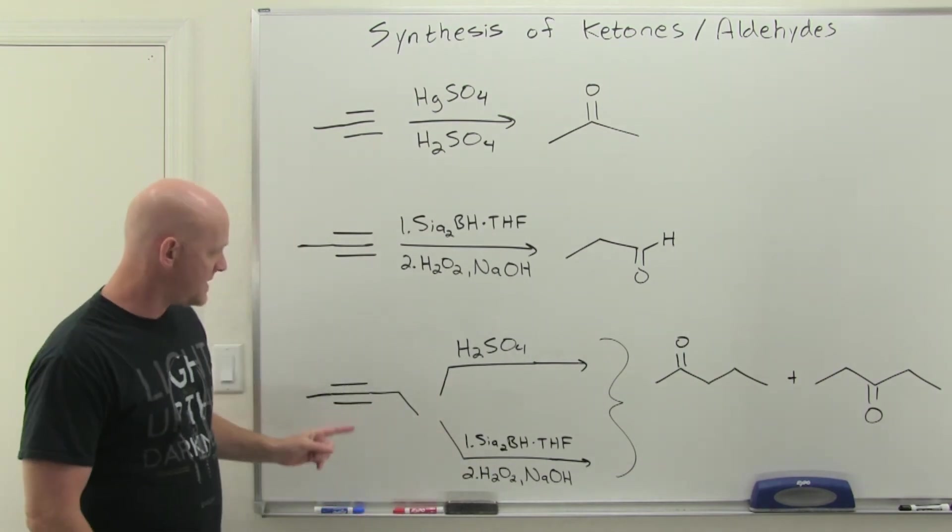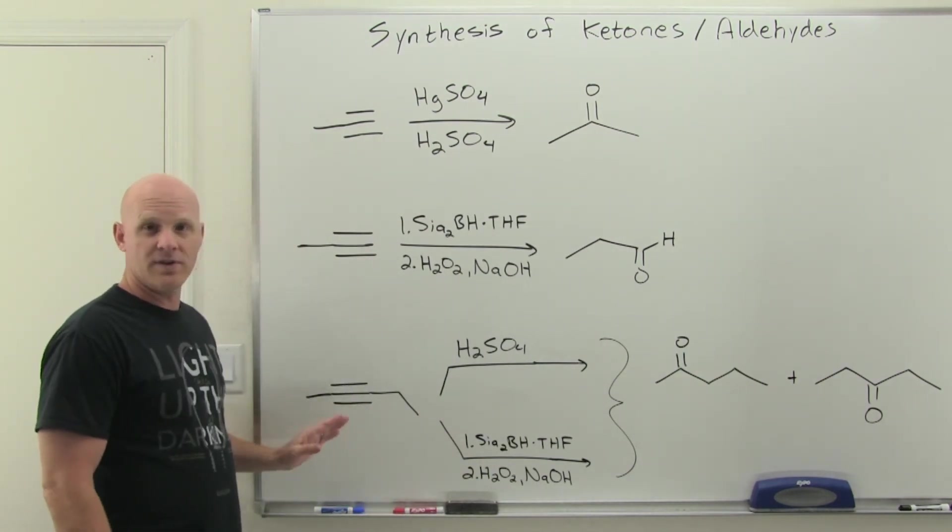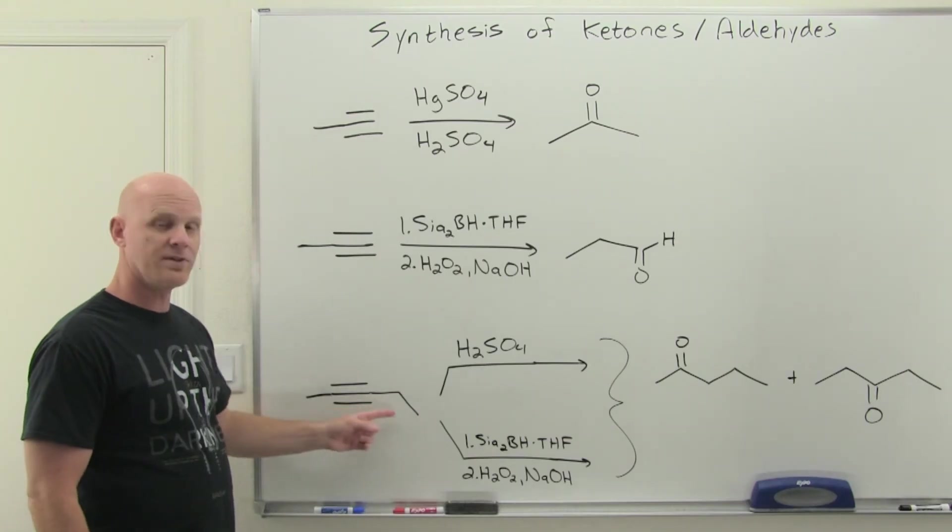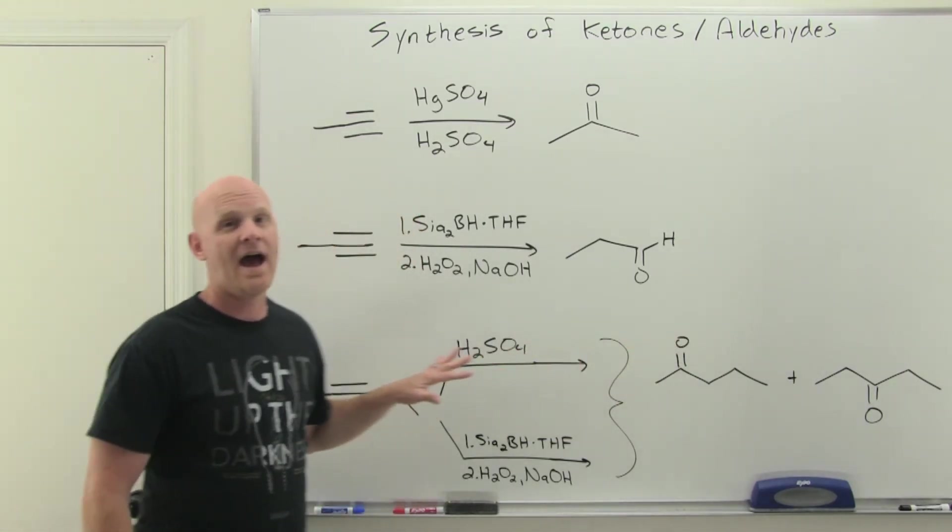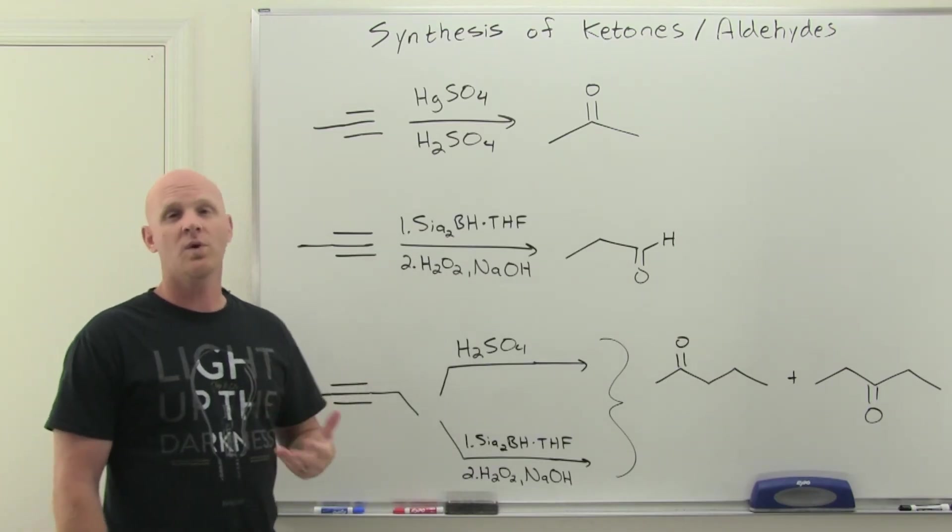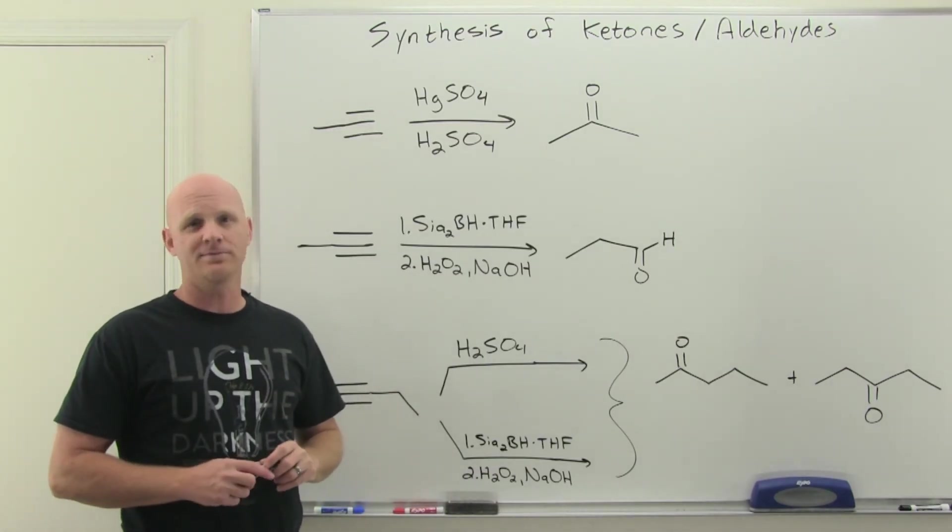And one thing to remember, if you use a symmetrical ketone, like I didn't use here - this one's asymmetrical, the left side and the right side are different. With an asymmetrical, we get the two different ketones. Had this been symmetrical though, you would have formed just two equivalents of the exact same ketone.